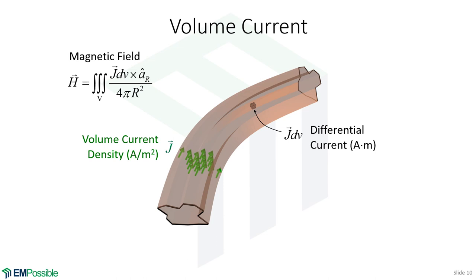The last distribution is a volume current. We integrate J dV, where J is the electric current density from Maxwell's equations and dV is the scalar differential volume. The argument inside the integral is otherwise unchanged — we just have a triple integral because we're integrating over a volume. Our differential current element now has units of amp-meters, and the volume current density J has units of amps per meter squared, which I think of as existing in the cross-section of the conductor.